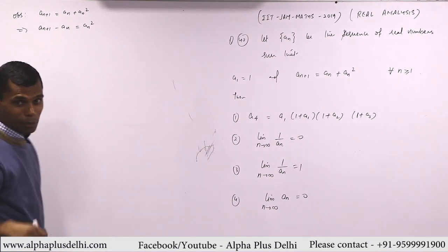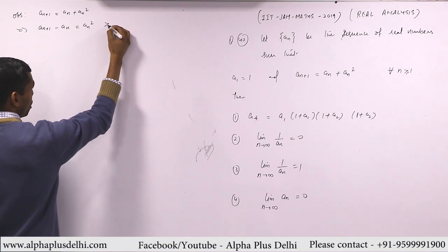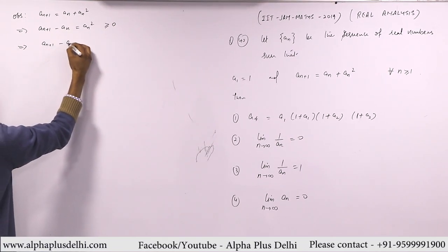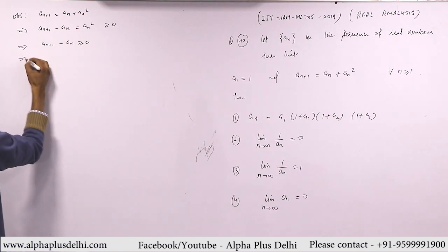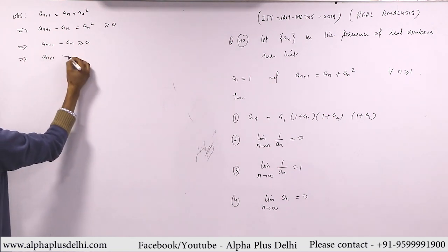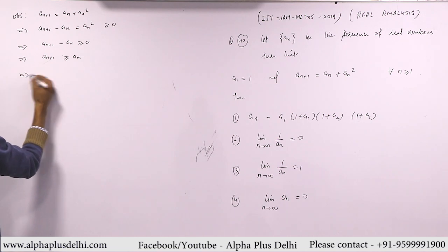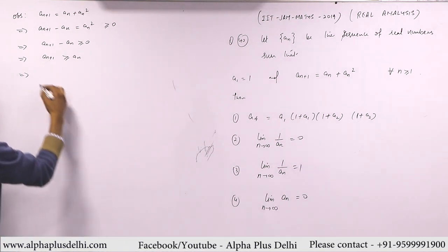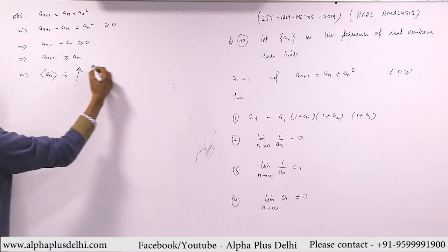Since it's the square of a real number, it's always non-negative. So from here we immediately get that a_{n+1} is greater than or equal to a_n. What does this tell us? The sequence a_n is increasing. You will get this immediately.